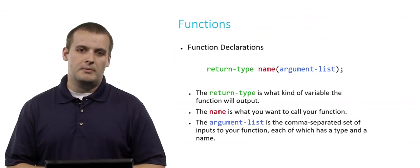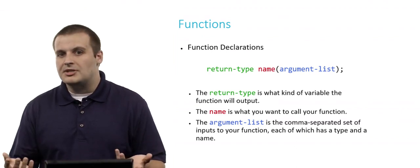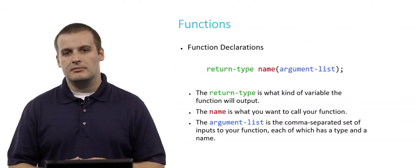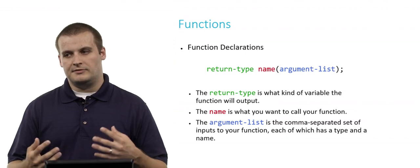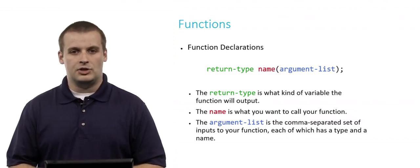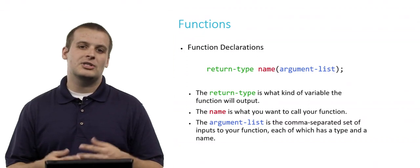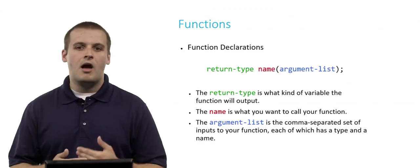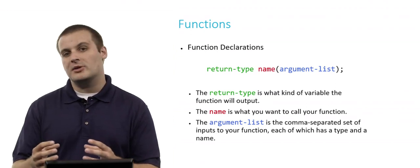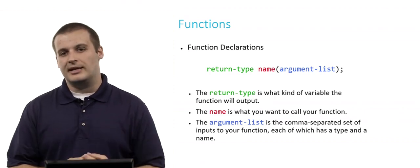The return type is what kind of variable the function will output. For example, if we multiply an integer by an integer, we'd expect the output to be an integer — so the return type would be int. The name is what you want to call your function. It's important to give functions meaningful names; if you name your function f, g, or mystery, you'll probably get tripped up trying to remember what they do. Lastly, the argument list is the comma-separated list of all inputs to your function, each of which has a type and a name.